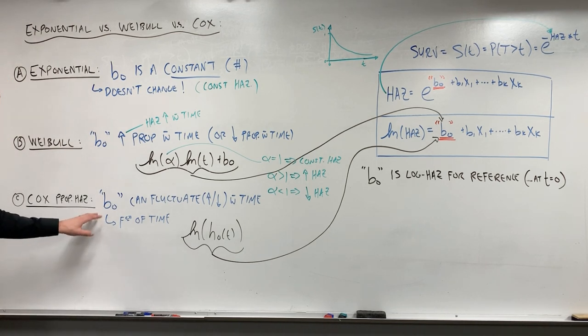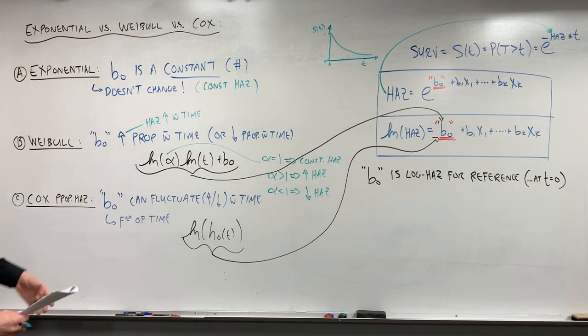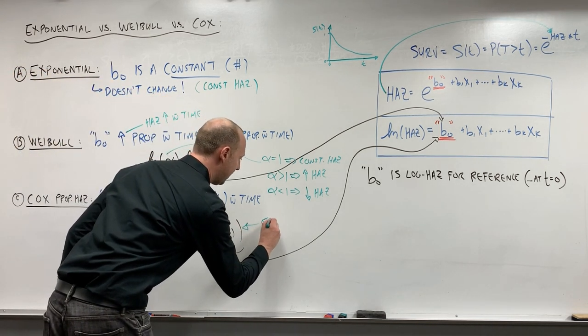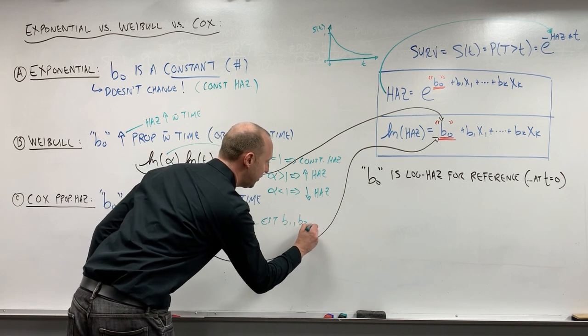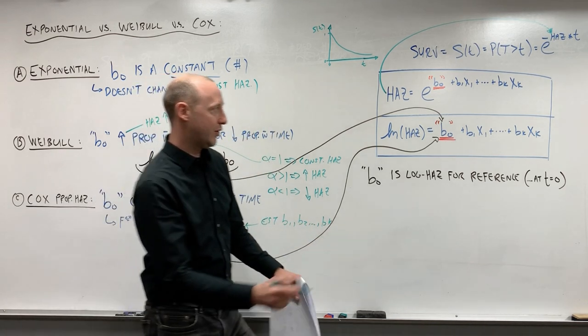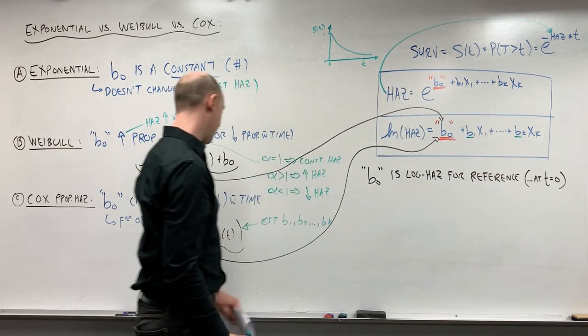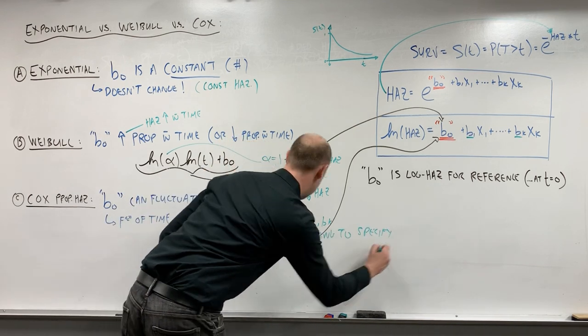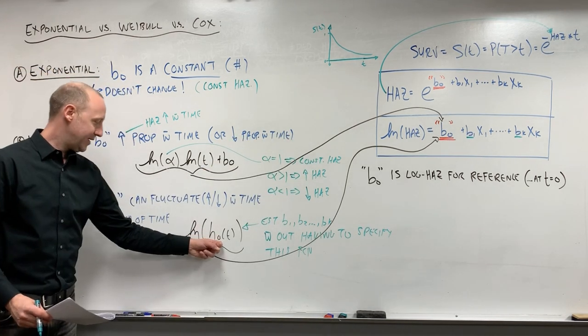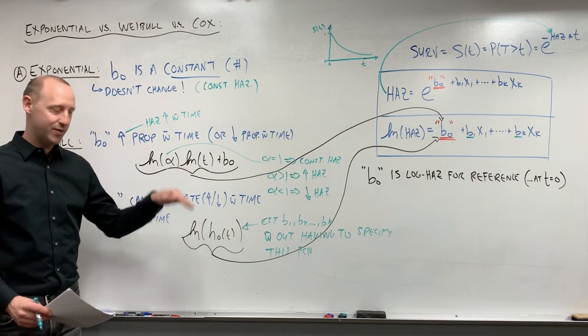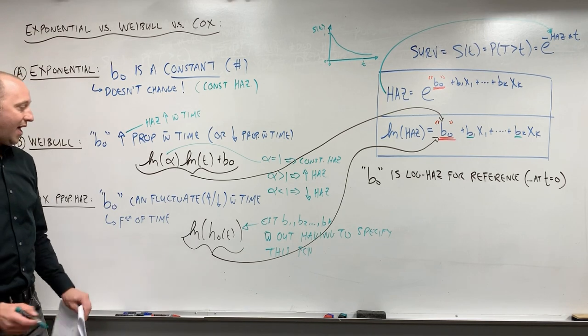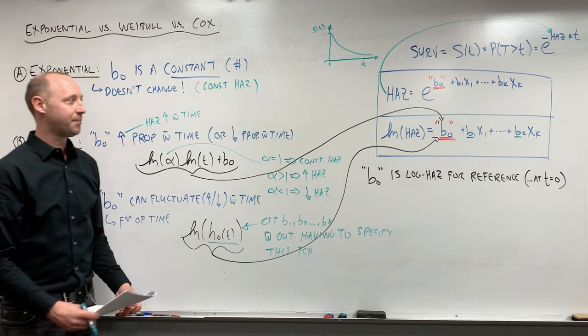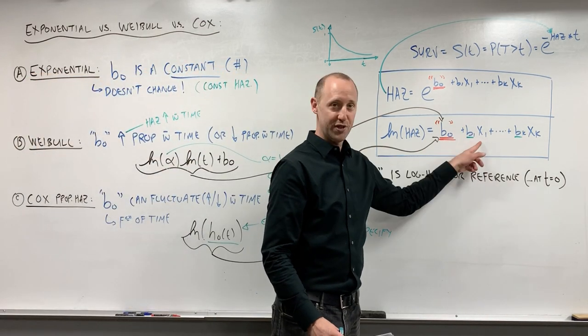Now, one of the great innovations that Cox had with the Cox proportional hazard model is he came up with a way that you can estimate B1, B2, up to Bk. So you can estimate all the coefficients in the model without having to specify this function. So essentially, it's a model that allows the hazard to increase or decrease with time, to be a function of time that fluctuates. And you found a way that you do not have to specify how it fluctuates over time, and you're still able to estimate the coefficients from the model.